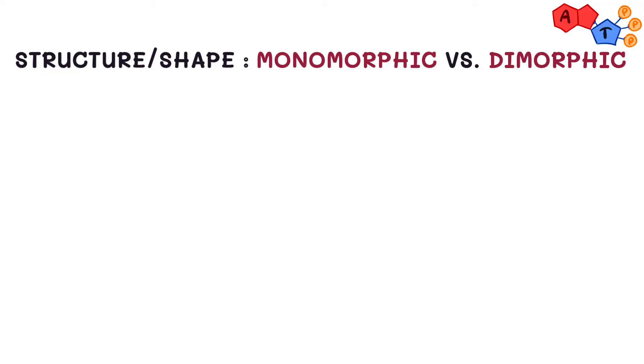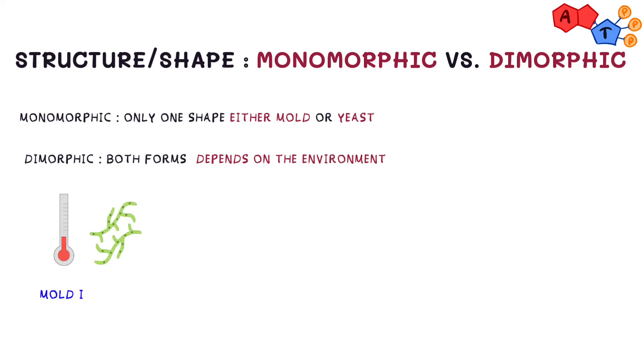Now for the structure and shape: monomorphic fungi exist as only one form throughout their lifespan, either mold or yeast. Dimorphic fungi, on the other hand, can exist in both forms. The form is usually determined by environmental conditions. Remember: mold in the cold, yeast in the heat. Think about how in cold weather living beings tend to come closer, and vice versa in hot weather. In other words, dimorphic fungi exist as molds at cooler temperatures and as yeasts at warmer temperatures.